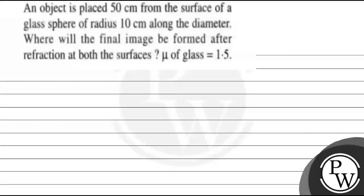Let's read the question. The question says: an object is placed 50 cm from the surface of a glass sphere of radius 10 cm along the diameter. Where will the final image be formed after refraction at both the surfaces? The refractive index of glass is 1.5.